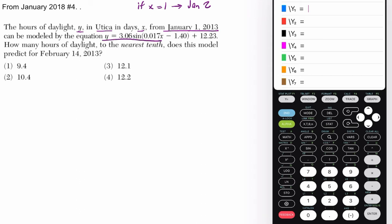And this is our equation right here, and essentially they want us to find out how many hours of daylight there would be to the nearest tenth on this date right here. Now, there are 31 days in January, and then an additional 14 days that we're looking at here in February.